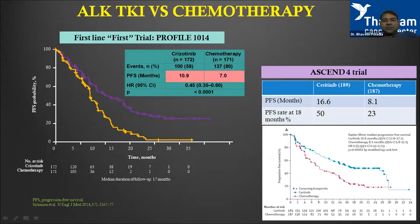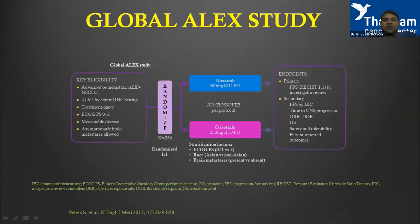The same result was seen with ceritinib when used against chemotherapy: PFS was almost double. Chemotherapy remained at seven to eight months while ceritinib improved to almost 16 months. Then comes the third molecule, alectinib, evaluated in the global ALEX study where alectinib was compared not to chemotherapy — the weaker arm — but to crizotinib, which was the standard of care.